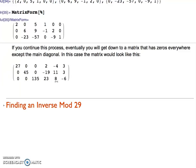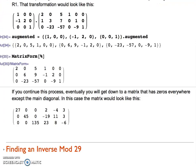Now I need to actually get this down to the identity. I need to get rid of the 27, the 45, and the 135 by multiplying by their respective inverses in the mod 29 number system. That's the next step, so watch that video next.